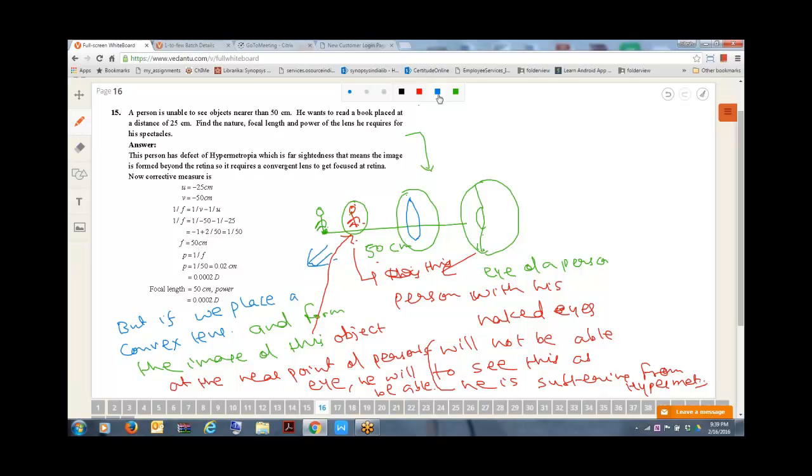Now we know that this convex lens, this will act like an object for this convex lens and this will act like an image. Object is U, image is V.